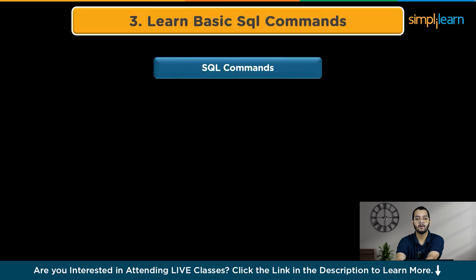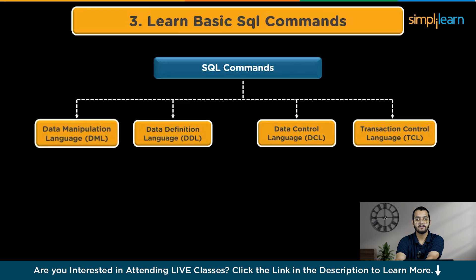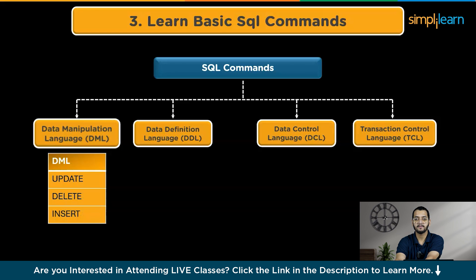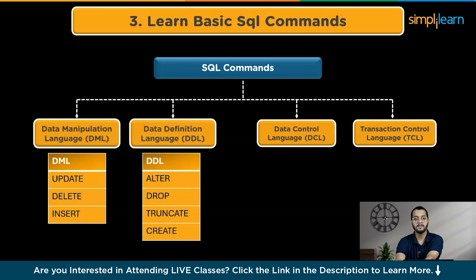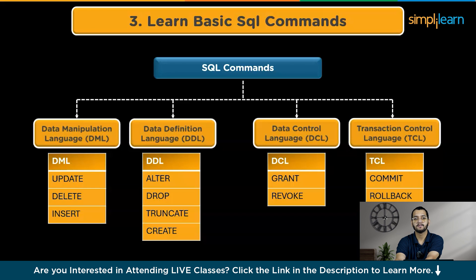The third step is learning the basic SQL commands. The main goal of learning SQL is to master the basic commands, which are grouped into four categories. First, Data Manipulation Language (DML) commands are used to work with data in databases — the main DML commands are INSERT, UPDATE, DELETE, and more. Second, Data Definition Language (DDL) commands set up and change database structure like creating, altering, or deleting tables, indexes, and views — the main DDL commands are CREATE, ALTER, DROP, and TRUNCATE. Third, Data Control Language (DCL) commands manage user permissions and access to the database — the main DCL commands are GRANT and REVOKE. Fourth, Transaction Control Language (TCL) commands control transactions in databases — the main TCL commands are COMMIT, ROLLBACK, and SAVEPOINT.